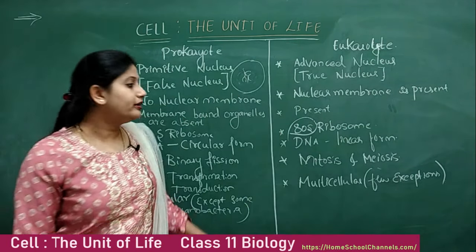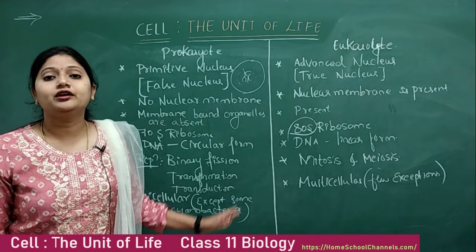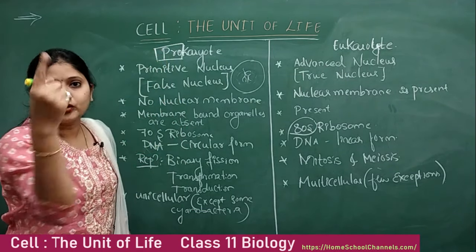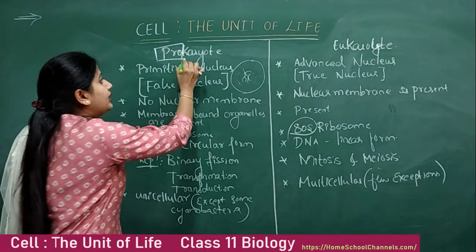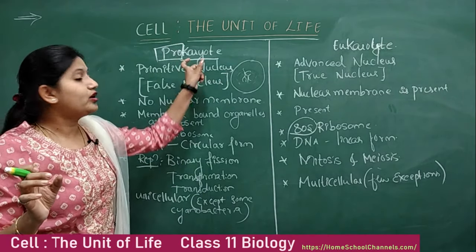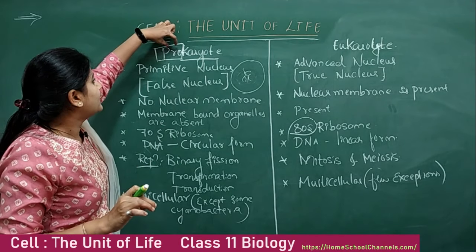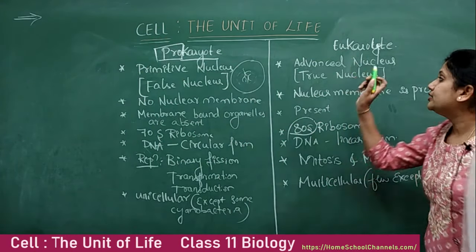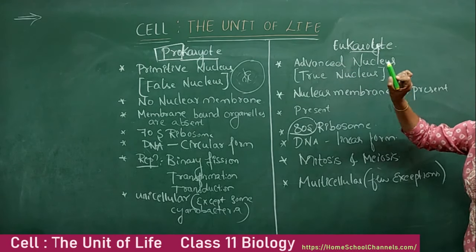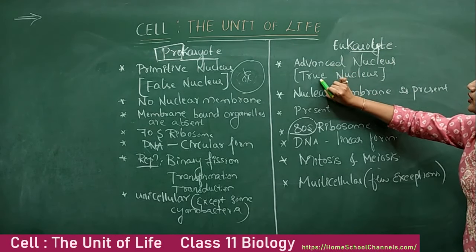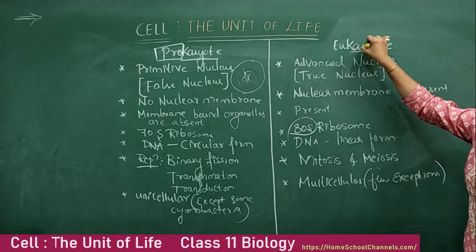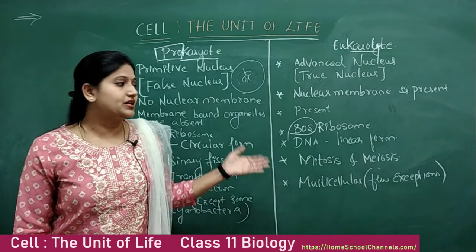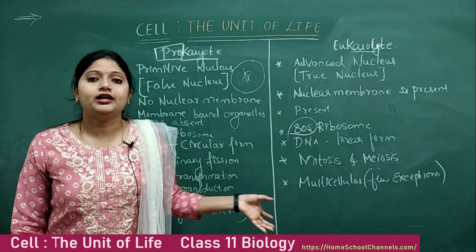The word 'pro' means old or primitive, and 'karyon' means nucleus — so prokaryote means old or primitive nucleus. 'Eu' means new or advanced, and 'karyon' means nucleus — so eukaryote means new, true, or advanced nucleus. Next we will move on to the types — prokaryotic and eukaryotic cells in detail — starting with the prokaryotic cell.